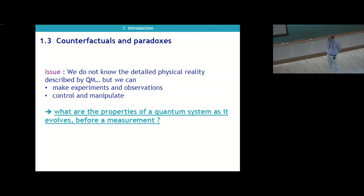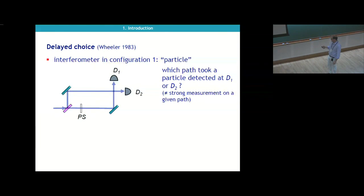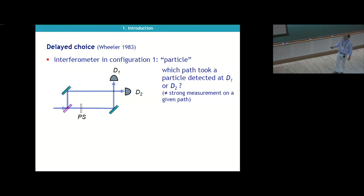What are the properties of a quantum system as it evolves before I make the final measurement? Most of you have heard about the delayed choice experiment, suggested by Wheeler in the late 1970s and early 1980s. We have an interferometer in two configurations. In configuration one, the particle enters the interferometer and then there are two output ports, D1 or D2. The question is: which path did a particle detected at D1 or D2 take?